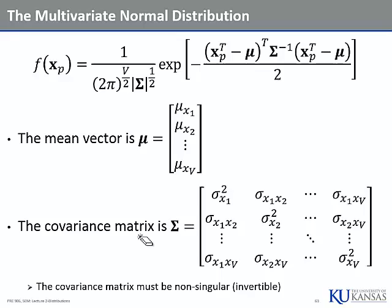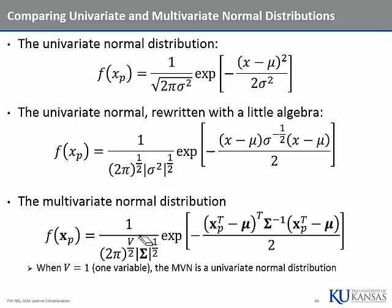For one variable, the covariance matrix is one-by-one; for two variables, there are three terms — sigma-squared-one, sigma-squared-two, and the covariance; for three variables, six terms. The number of unique terms in the covariance matrix grows quadratically as the number of variables grows linearly. If you build a scale with five items and then add five more, you've taken the covariance matrix from five-by-five to ten-by-ten — the number of unique terms grows much faster.